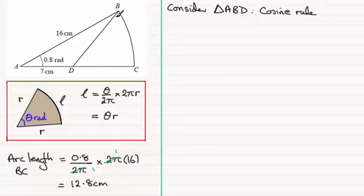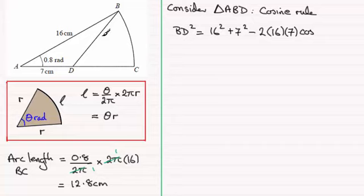So we've got BD squared equals the sum of the squares of the other two sides, so that's going to be 16² plus 7² minus twice the product of those two sides, so it's 2 times 16 times 7 times the cosine of the included angle, which is the 0.8 radians.